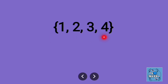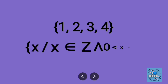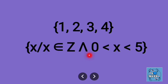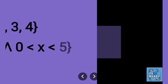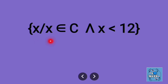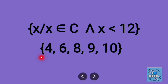We can also convert a tabular form into set builder form. For example, the set {1, 2, 3, 4} contains natural numbers as well as whole numbers or integers. You can write it as { x | x ∈ Z, 0 < x < 5 }. Another example: { x | x ∈ C, x < 12 } — composite numbers less than 12 are 4, 6, 8, 9, 10.